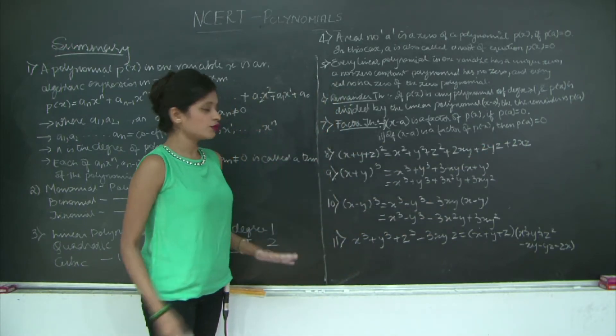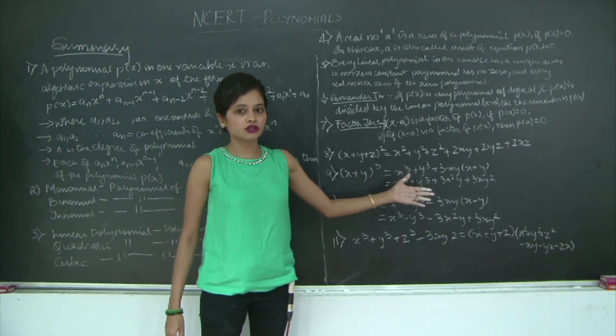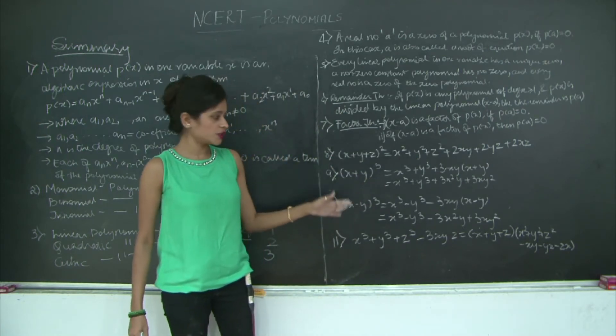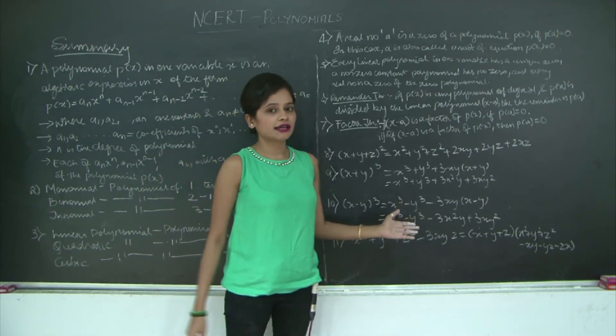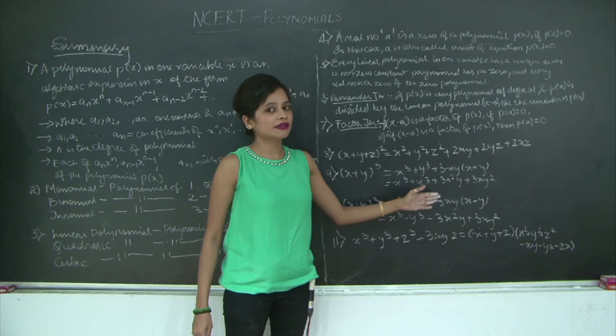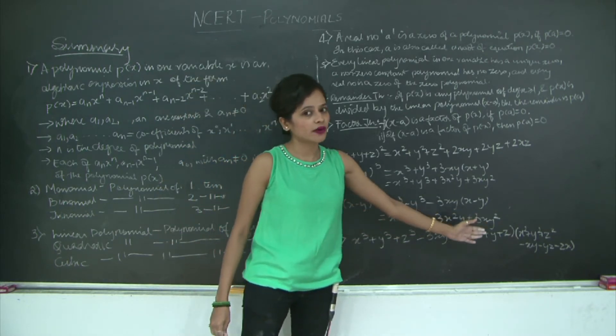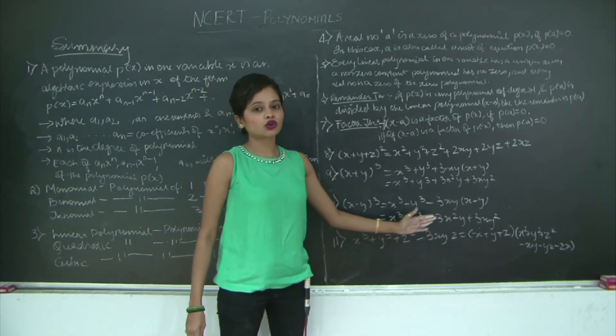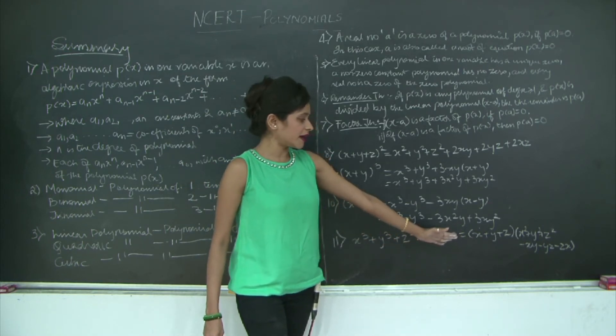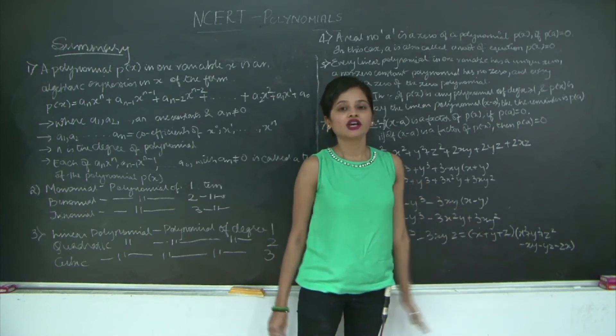And finally, we have been introduced to four new algebraic identities along with the four other ones that we learned in our 8th grade. We have (x + y + z)² = x² + y² + z² + 2xy + 2yz + 2zx. Then we have cube of two terms: (x + y)³ can be written as x³ + y³ + 3xy(x + y), which can be further expanded into x³ + y³ + 3x²y + 3xy². Similarly, for (x - y)³, we have x³ - y³ - 3xy(x - y), which can be further expanded into x³ - y³ - 3x²y + 3xy². And finally, x³ + y³ + z³ - 3xyz is the product of two factors: (x + y + z)(x² + y² + z² - xy - yz - zx).